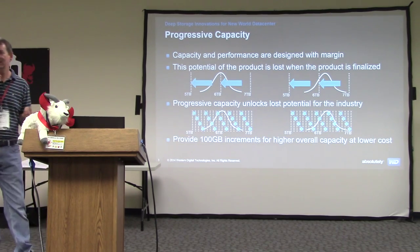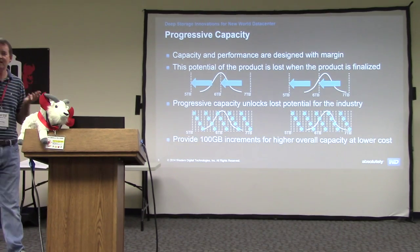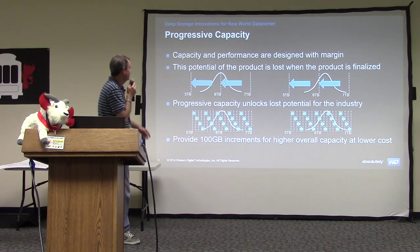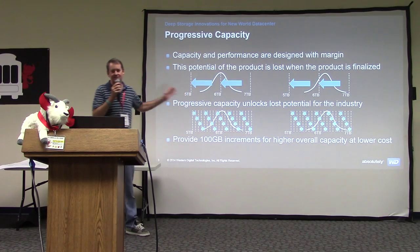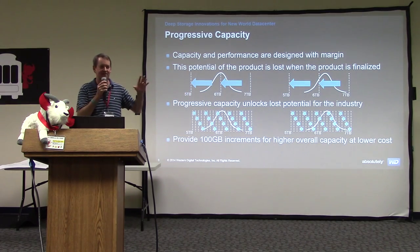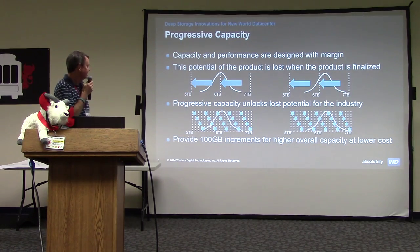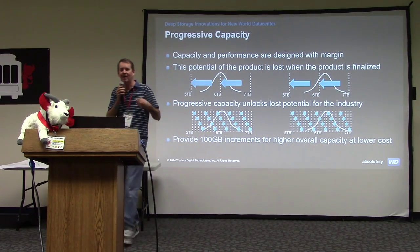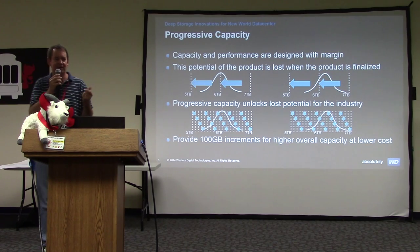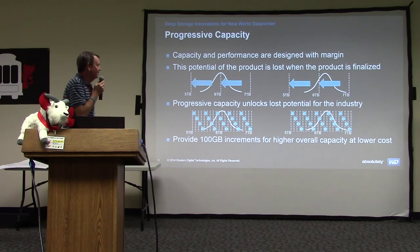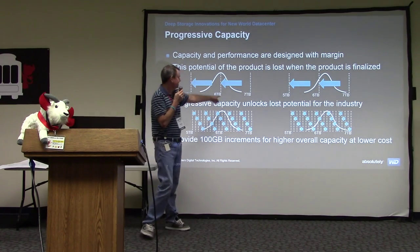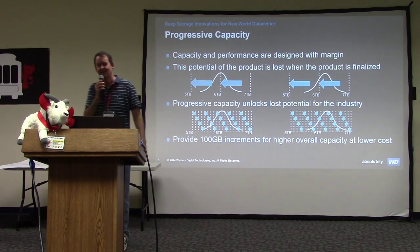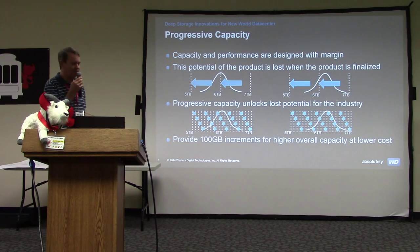The world is changing that way — what can we do to play in that game? In the old world, everything had to be matched: performance matched, size matched, everything matched. We'd have a factory yield of capacity — how good we could get those magnetic grains working and the heads working. And then we'd have to ship a drive that yielded six and a half terabytes as a six because that's what everybody wants. That's the way it's been forever.